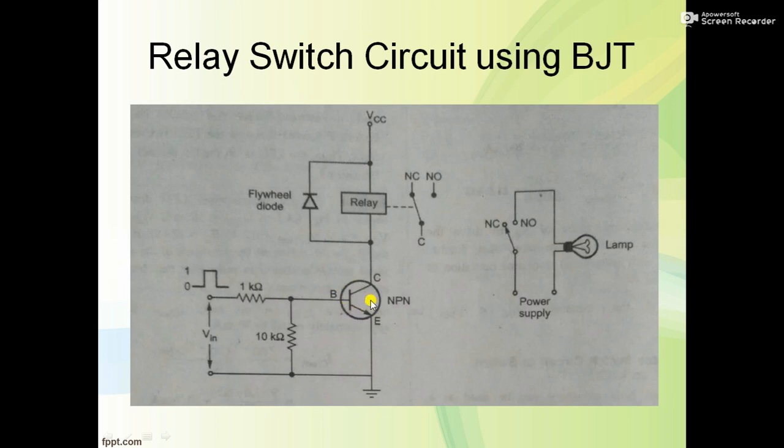When the transistor acts as a closed switch or on switch, the relay switch position changes from normally closed to normally open. When the relay switch changes state, the relay coil is energized.